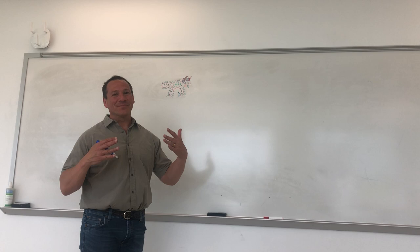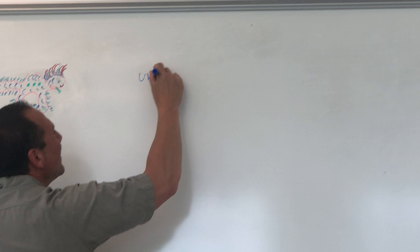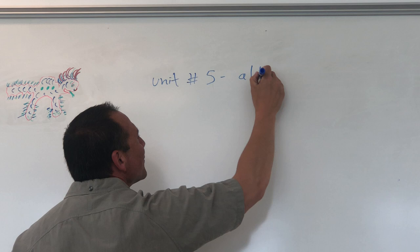Well, here we are, kids. Evolution with Glenn. The last episode. Unit number five: Altruism.